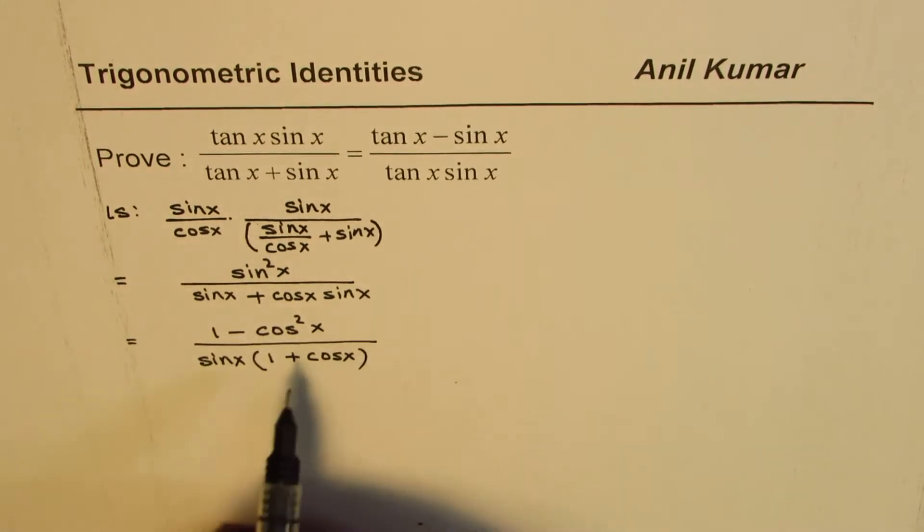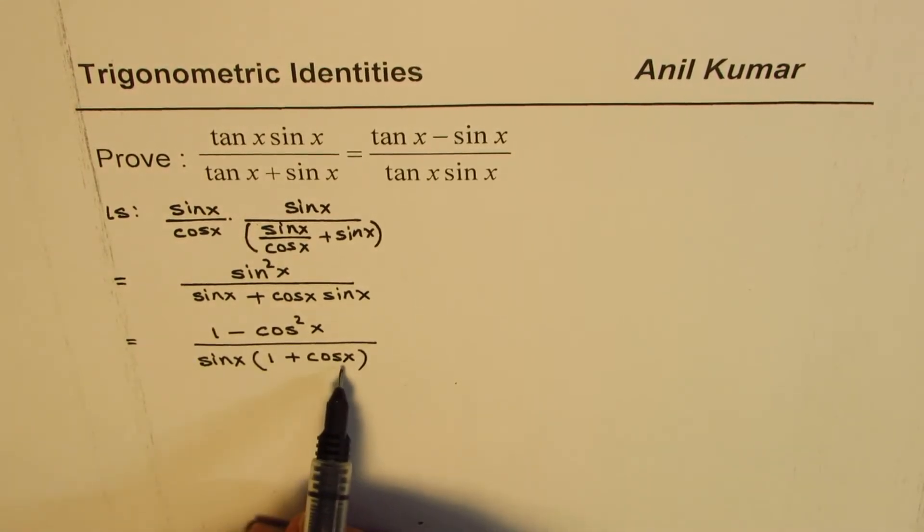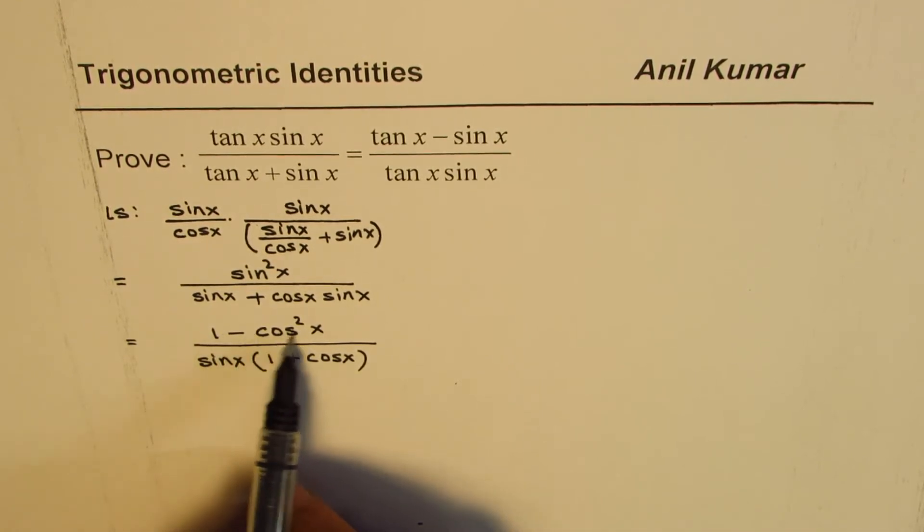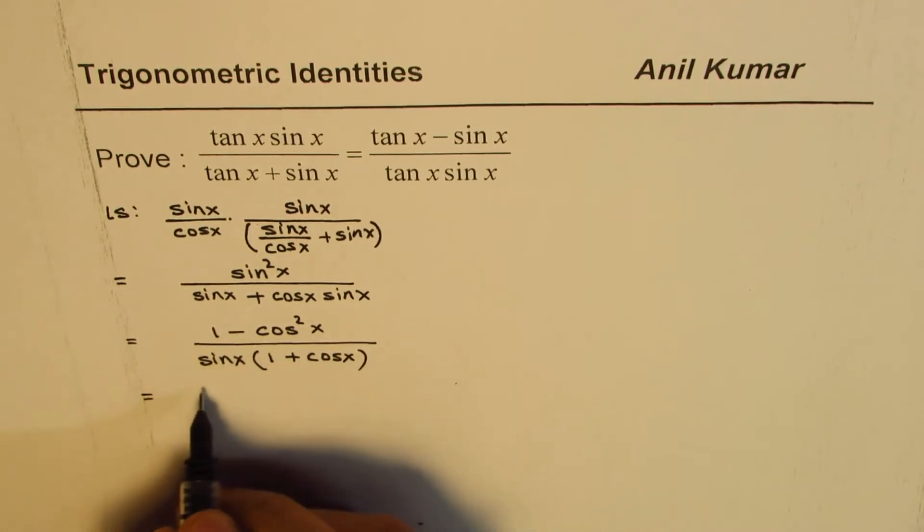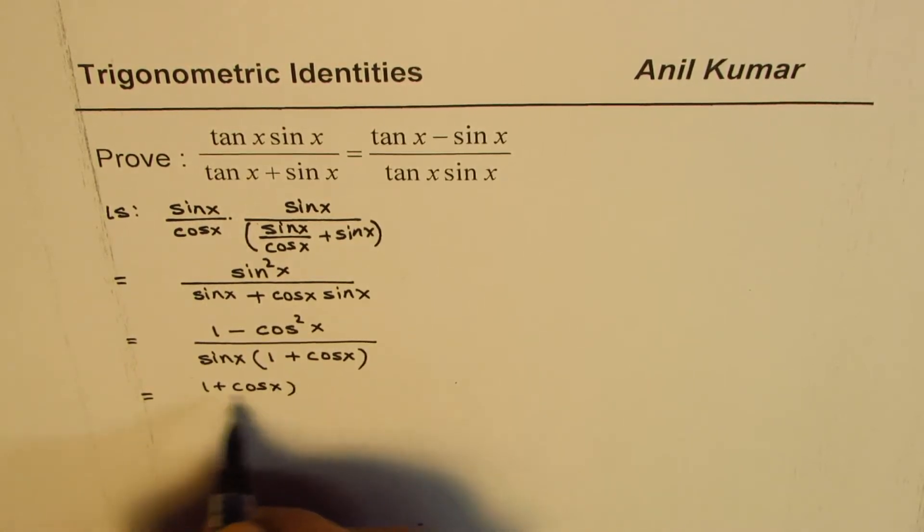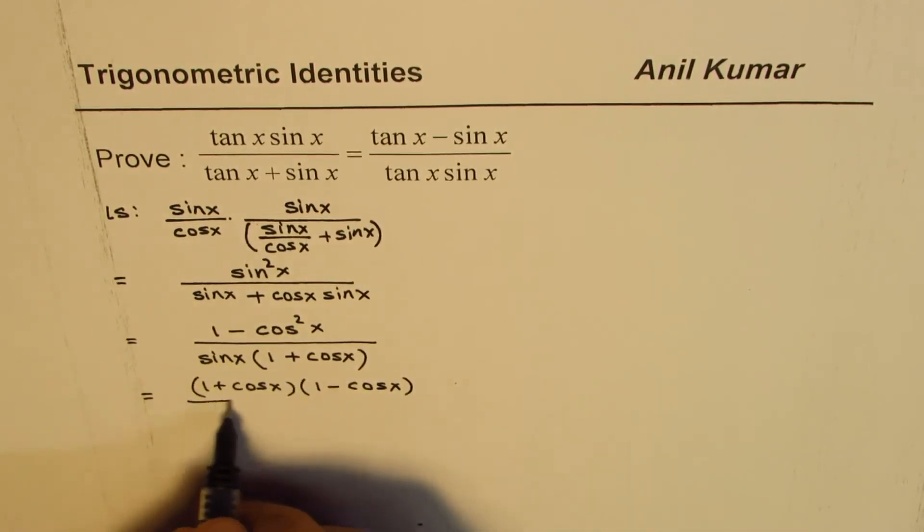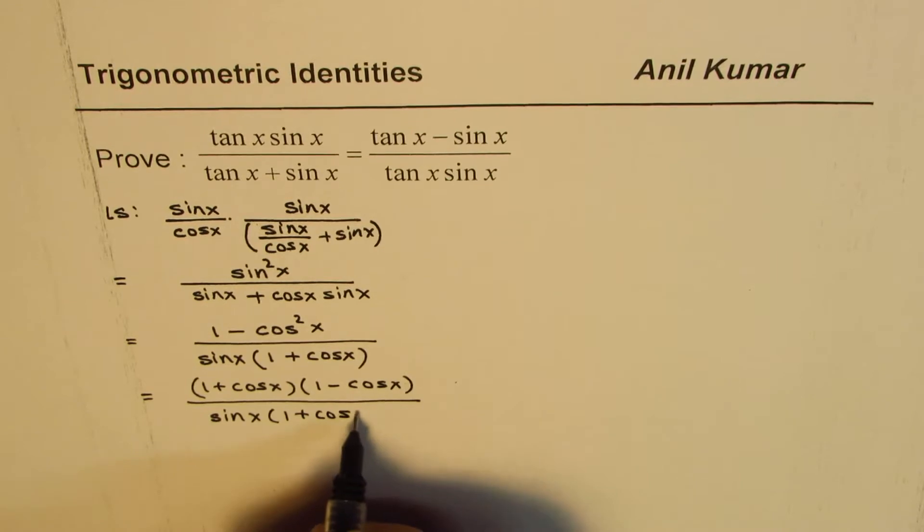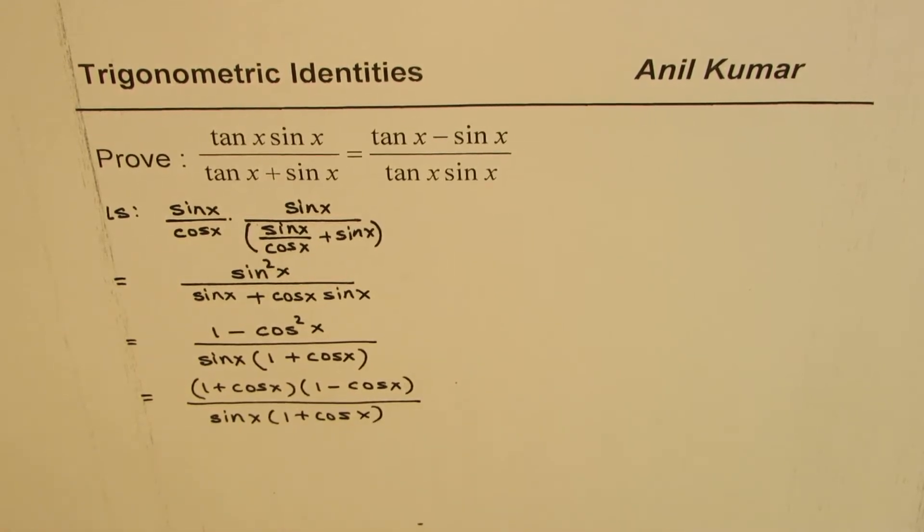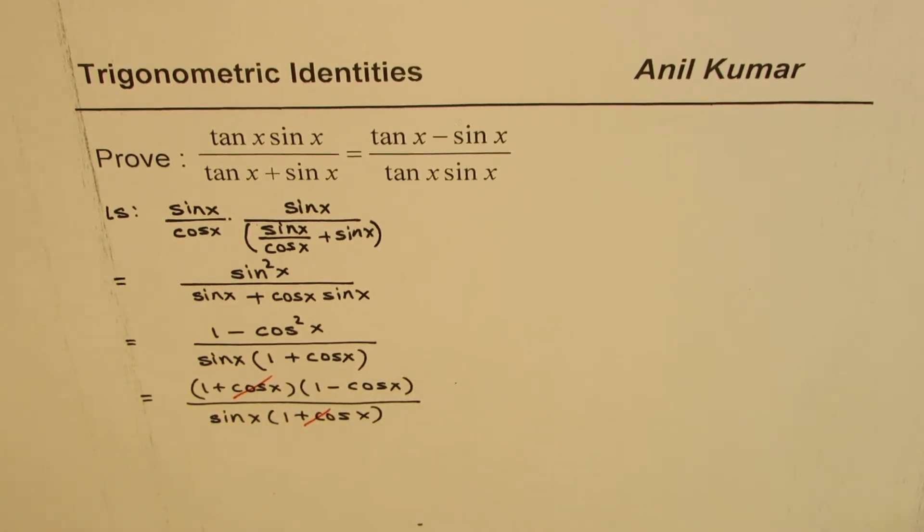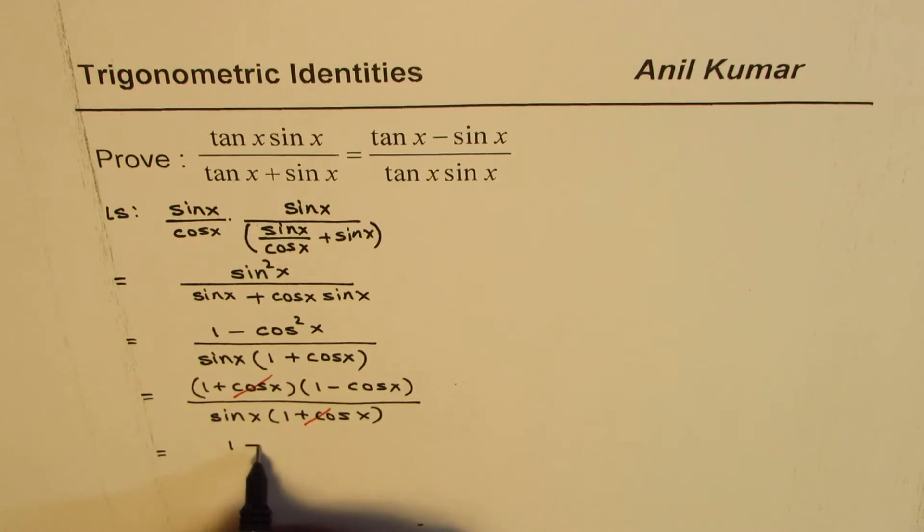In the denominator I can take sine x common, so I get sine x times 1 plus cos x. Now 1 plus cos x can be cancelled. Let's write the numerator as 1 plus cos x times 1 minus cos x, denominator is sine x times 1 plus cos x. So now 1 plus cos x cancels out.